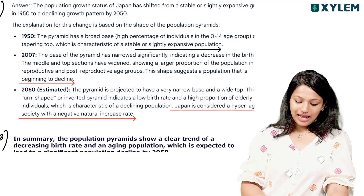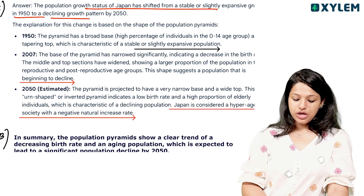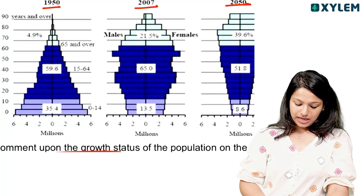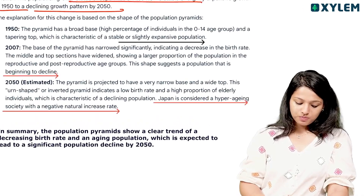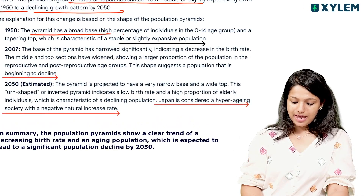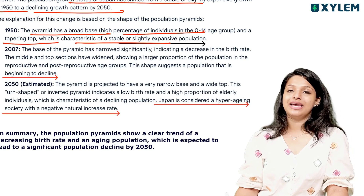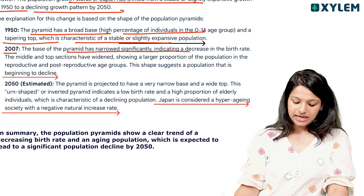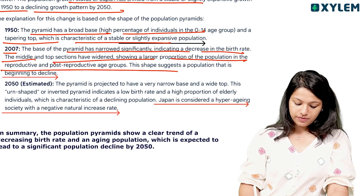The population growth status of Japan shifted from a stable to slightly expansive growth in 1950, to a declining pattern by 2050. The 1950 pyramid has a broad base, high percentage of individuals in the 0 to 14 age group, and tapering at the top — characteristic of a stable or slightly expansive population. By 2007, the pyramid has narrowed significantly, indicating a decrease in birth rate, with the middle and top sections widened, showing a larger population in the reproductive and post-reproductive age groups, shapes characteristic of a population that is beginning to decline.